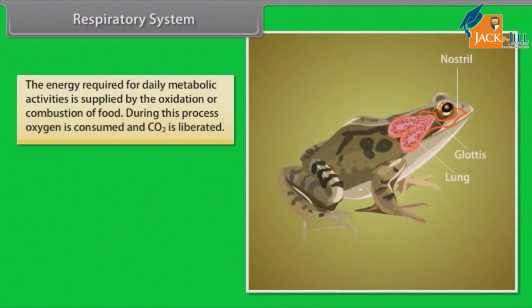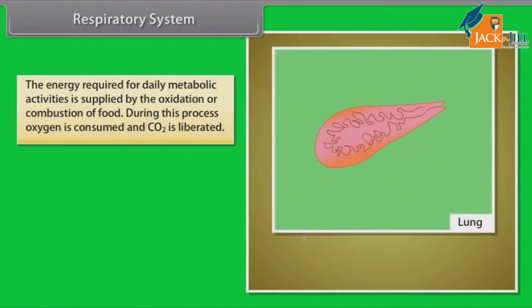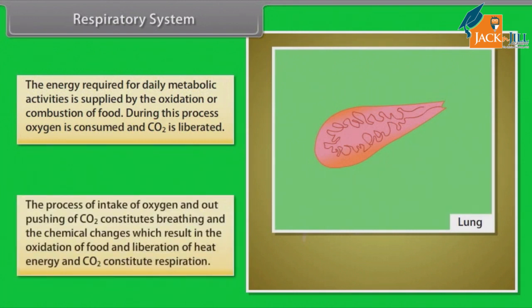Respiratory System: The energy required for daily metabolic activities is supplied by the oxidation or combustion of food. During this process, oxygen is consumed and CO₂ is liberated. The process of intake of oxygen and expulsion of CO₂ constitutes breathing, and the chemical changes resulting in the oxidation of food and liberation of heat energy and CO₂ constitute respiration.